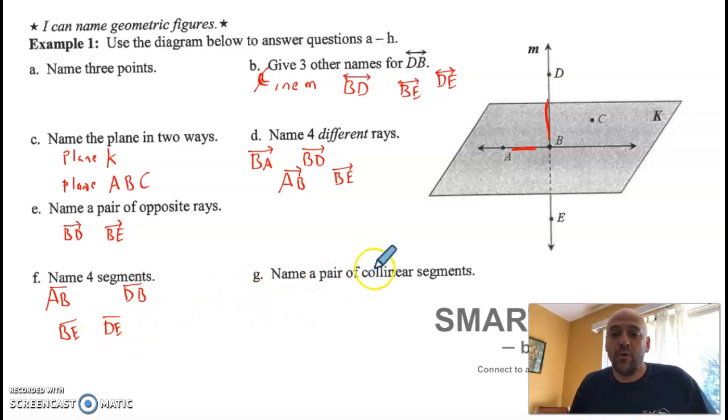Name a pair of collinear segments. Collinear means on the same line. So segments that are on the same line. We already named a couple of them. Let's look at this line right here. So a segment would be DB. On the same line of DB is segment BE. And that answers the question. That's a pair of segments that are on the same line. Just to throw this in the mix, we could have done segment DE. Those three segments are all on the same line.